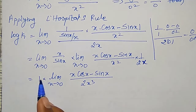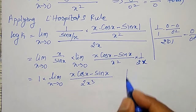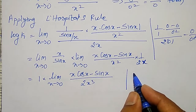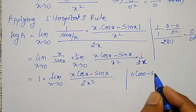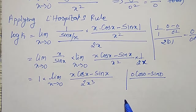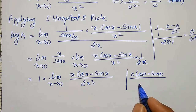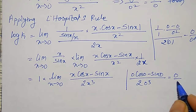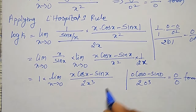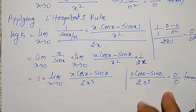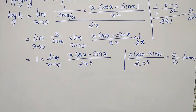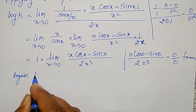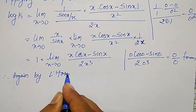The limit of x / sin x as x tends to zero equals 1. The remaining term (x·cos x − sin x) / 2x³ is again in 0/0 form since x·cos 0 − sin 0 = 0, divided by 0. So I apply L'Hôpital's rule again.